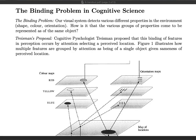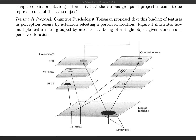One famous proposal for how the binding problem is solved comes from cognitive psychologist Ann Treisman, who proposed that the binding of features in perception occurs by attention selecting a perceived location. Figure one illustrates how multiple features are grouped together by attention given sameness of perceived location.